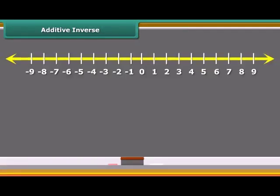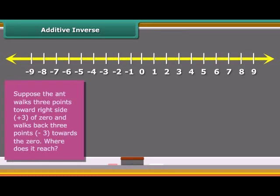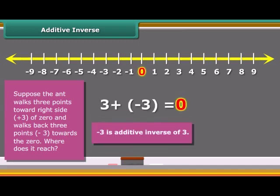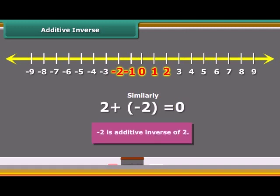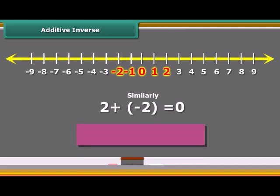Now we will learn additive inverse. Suppose the ant walks three points from 0 to the right side and walks back three points. Where does it reach ultimately? You can see that it will reach 0. We add 2 and minus 2, we obtain the sum as 0. Numbers such as 3 and minus 3, 2 and minus 2, when added to each other, give the sum 0. They are called additive inverse.